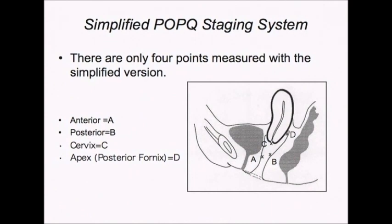The point representing the posterior vaginal wall will be a point at the rugal fold roughly three centimeters proximal to the hymeneal remnants on the posterior vaginal wall — point B in this diagram. The point representing the cervix will be the anterior lip of the cervix, point C in this diagram. And the point representing the apex will be the posterior fornix or cuff scar in a hysterectomized patient, represented as point D in this diagram.